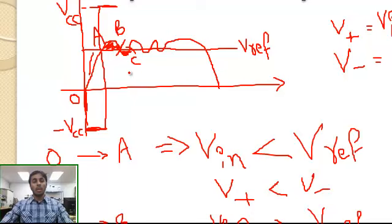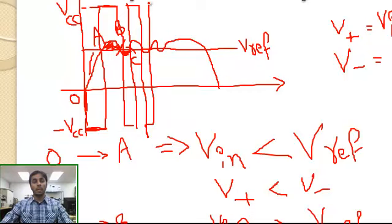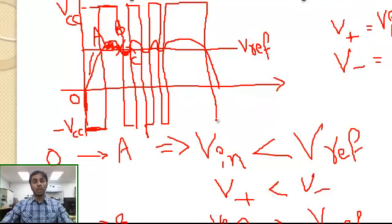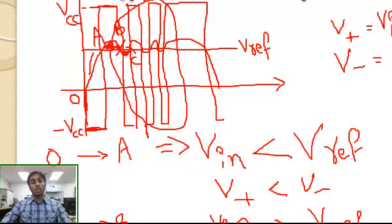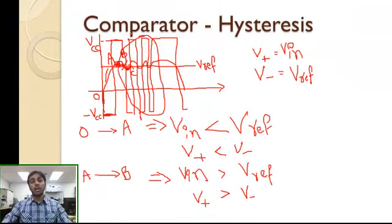From point B to C, the input signal falls below the reference — it fluctuates, then goes back up, and this continues. Depending on whether the input signal falls below or rises above the reference, the comparator switches. Because the input fluctuates around the reference voltage, there is a lot of distortion. The output of the comparator continuously switches between positive VCC and negative VCC.